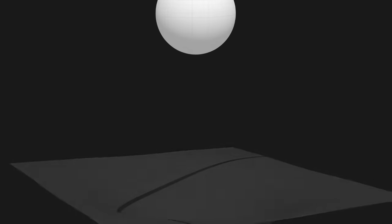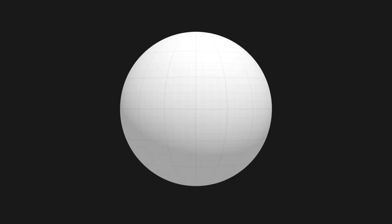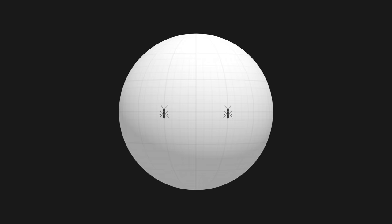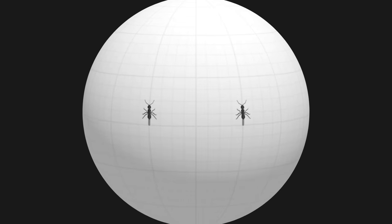To understand, we can imagine the surface of a sphere, on which two ants would head north. At the start, the two paths are parallel, and we might think that as they progress straight ahead, the two trajectories will never cross.